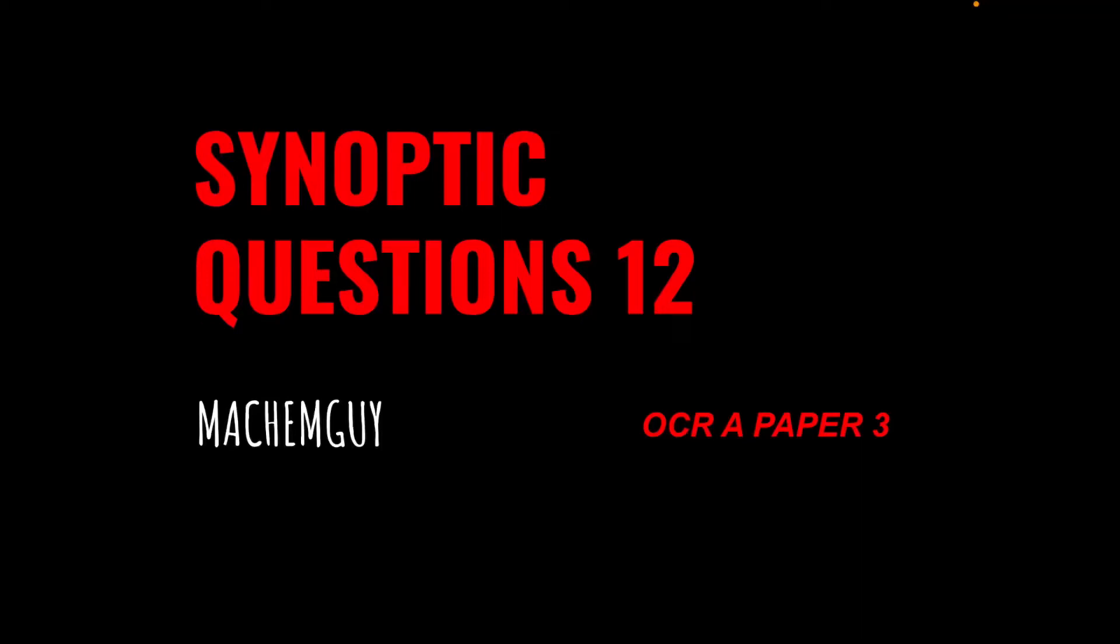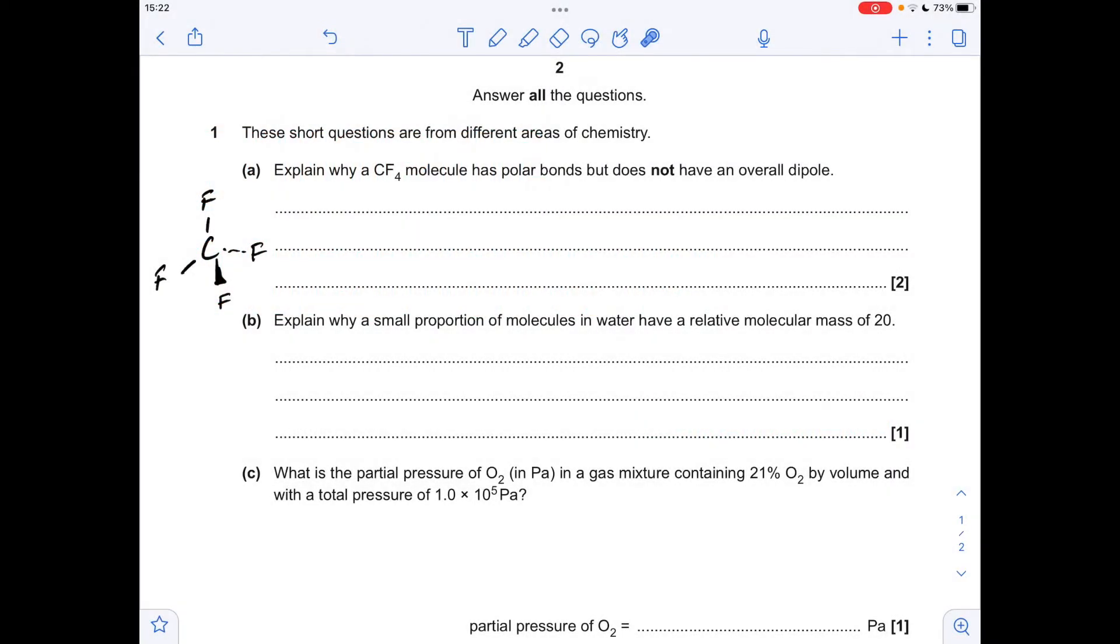Got another question for the synoptic questions playlist. As always, the link to the questions is in the description of the video if you wanted to try it first. Okay, so let's make a start. Why does the CF4 molecule have polar bonds but not an overall dipole?